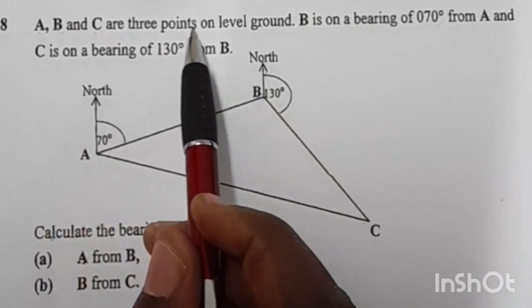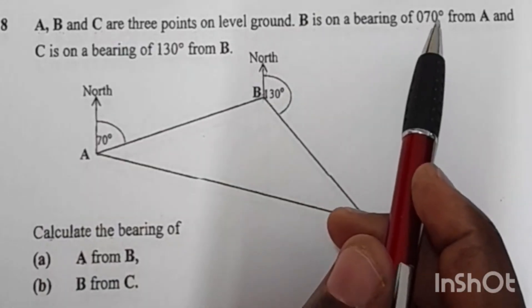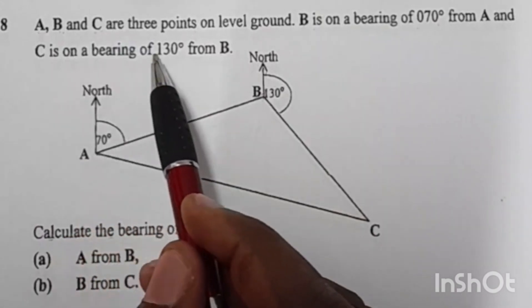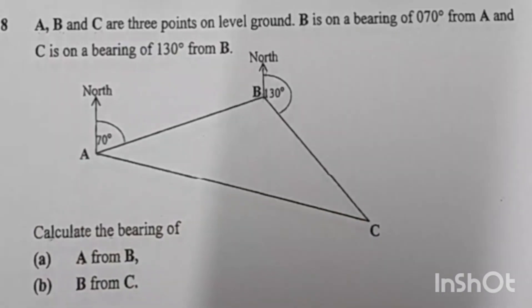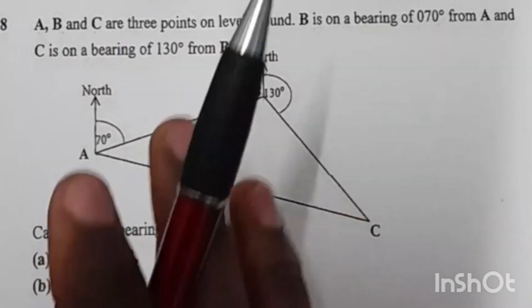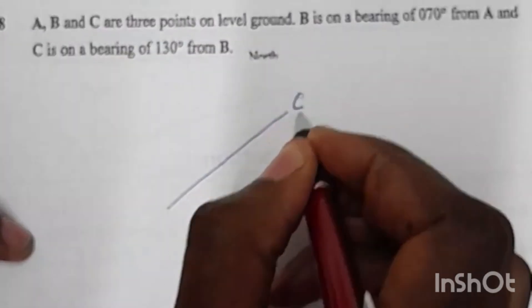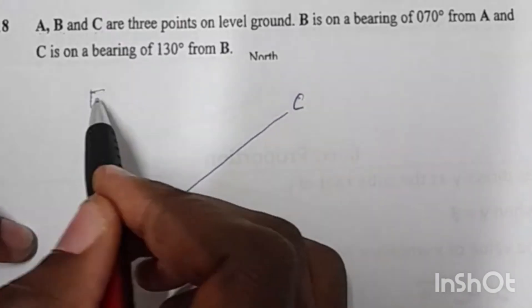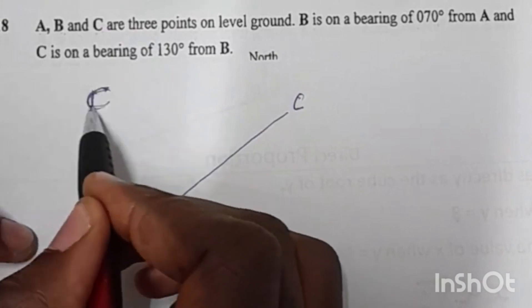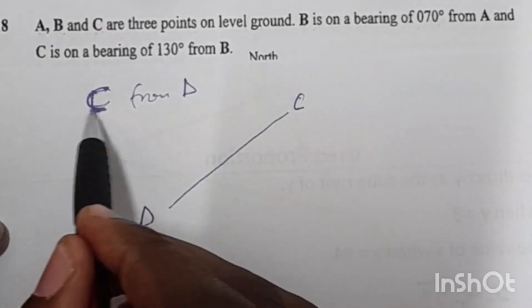A, B and C are three points on level ground. B is on a bearing of 070 degrees from A, and C is on a bearing of 130 degrees from B. One important thing to note is that language in bearings is very important. For example, if you are asked to find the bearing of C from D, you need to understand what that means.